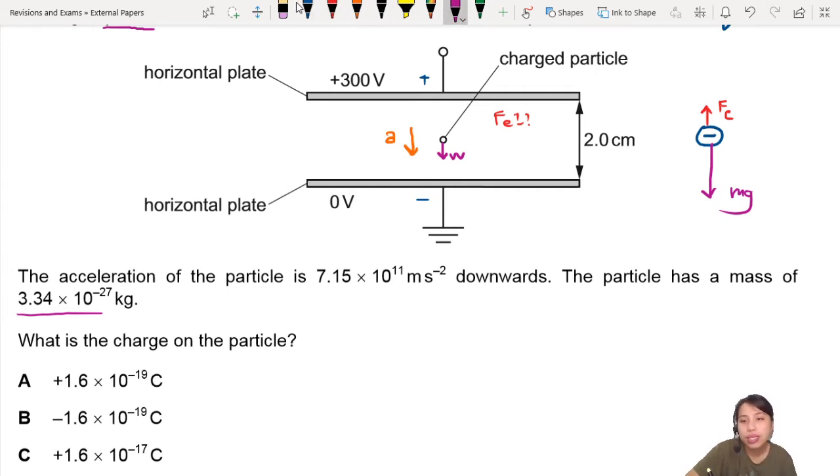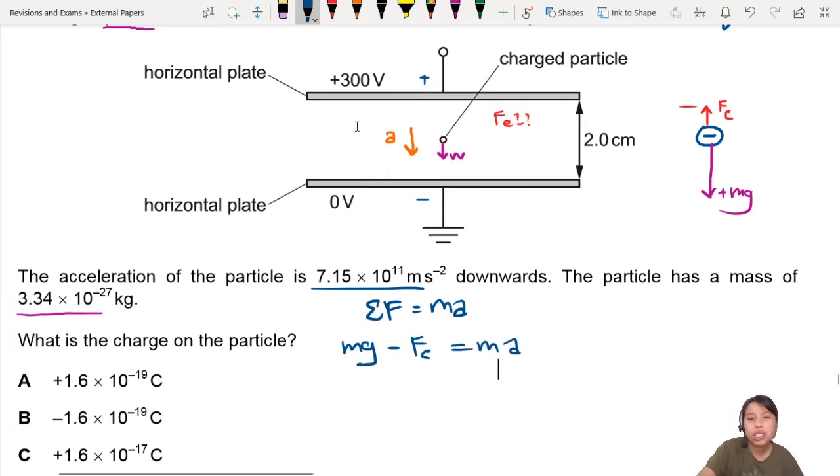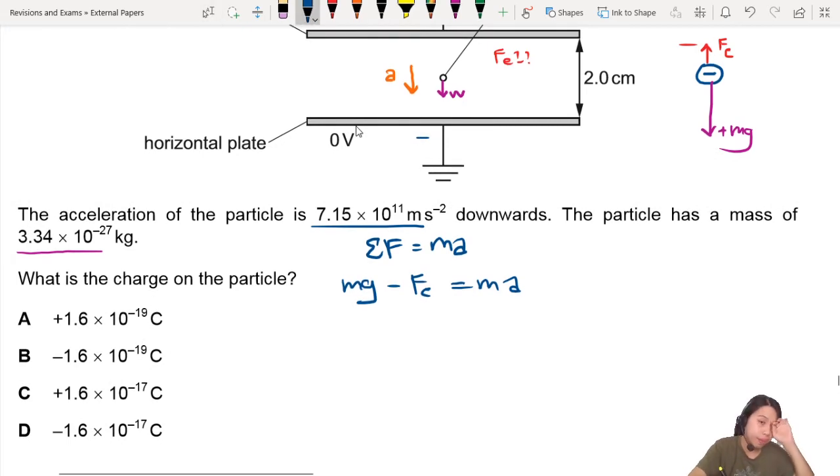So let me say that downwards is positive, upwards is negative, because I'm going to do some Newton's second law. So you have acceleration, you have forces. That's got to be Newton's second law, where the net force equals to the mass times acceleration. So net force here, I said mg is positive minus Fe equals Ma. And I want to find the charge on the particle, right? So Fe equals mg minus Ma, or I could say m times g minus a.